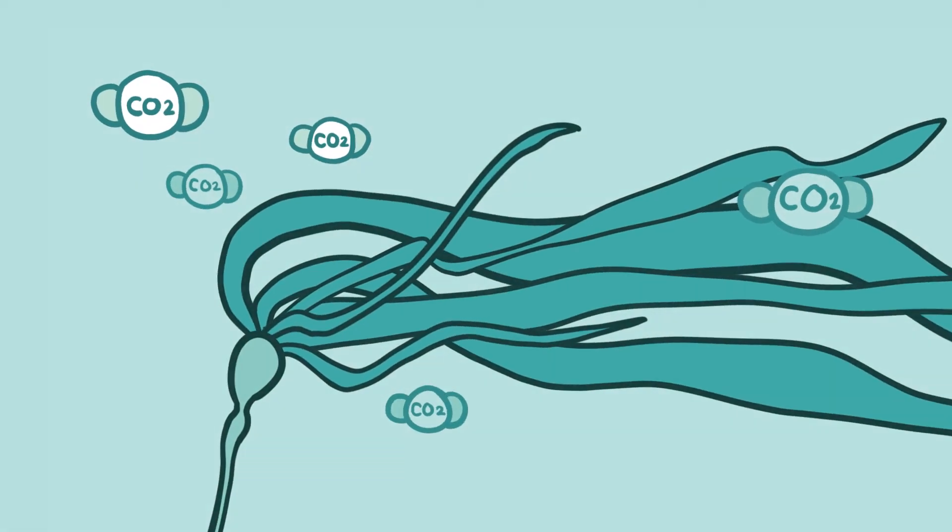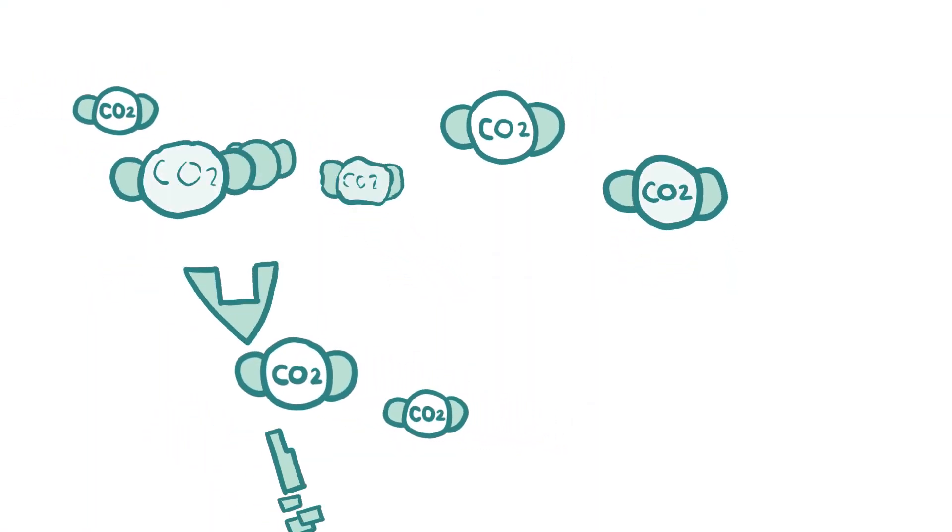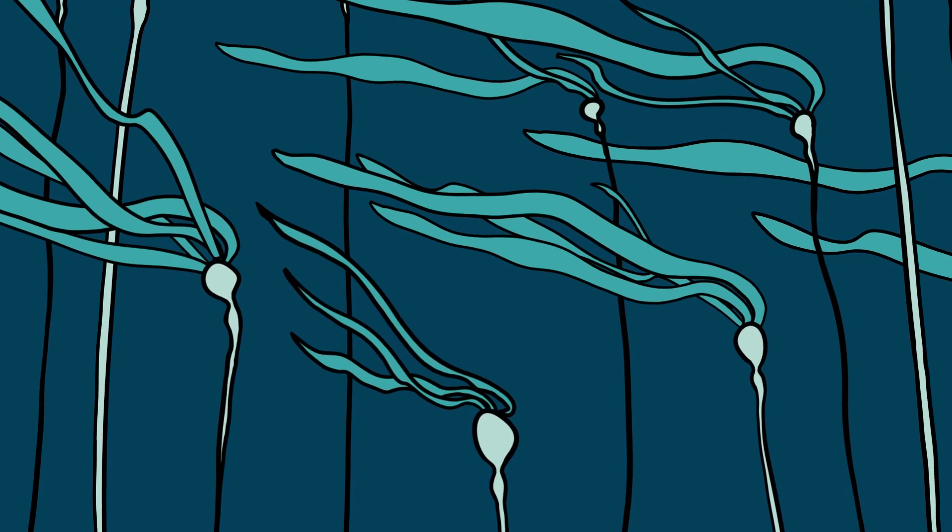Kelp needs carbon to grow. And did we mention kelp grows fast? Kelp absorbs our excess carbon emissions from the sea, using it to form the building blocks of its tissues. The more kelp we grow and eat, the more excess carbon is removed from the sea.